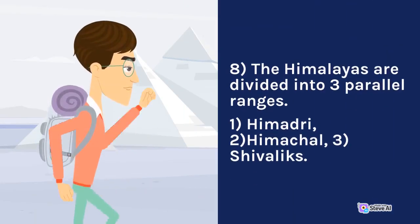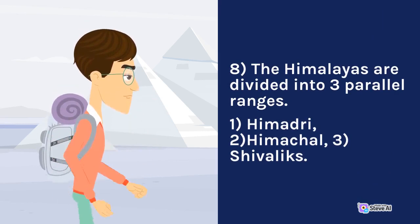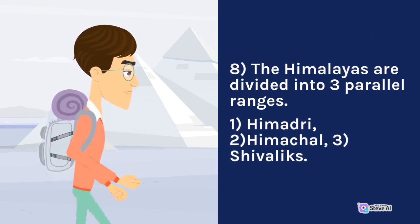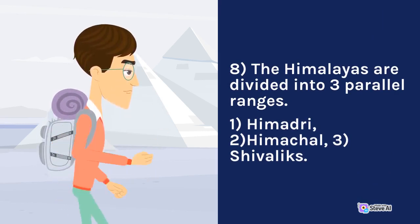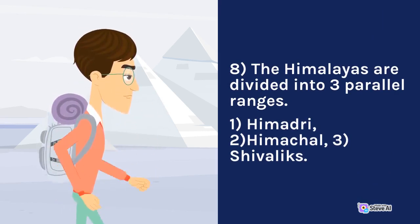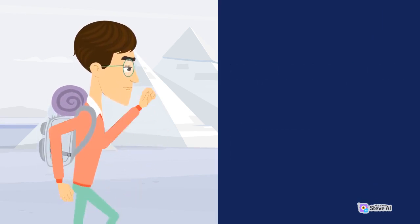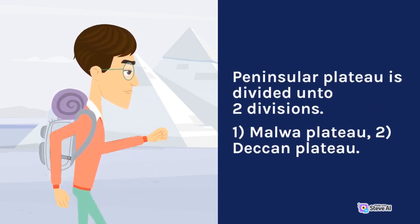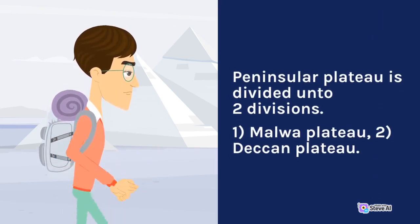Eight: The Himalayas are divided into three parallel ranges — one: Himadri, two: Himachal, three: Shivaliks. The Peninsular Plateau is divided into two divisions: one: Malwa Plateau, two: Deccan Plateau.